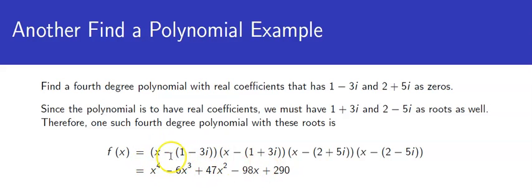So we have x minus (1 minus 3i), x minus (1 plus 3i), x minus (2 plus 5i), and x minus (2 minus 5i).